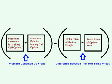The trader's maximum potential loss is the difference in premiums that he collects up front minus the difference between the two strike prices.